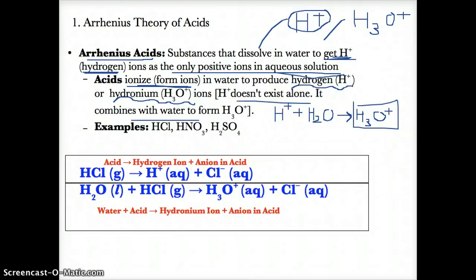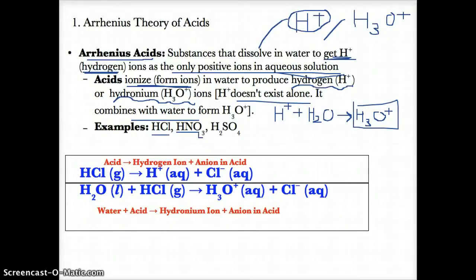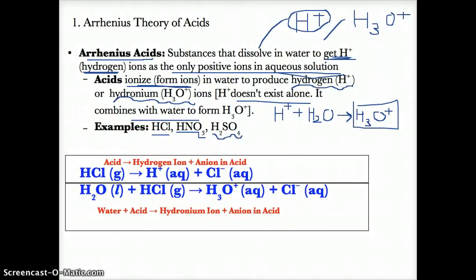Examples of Arrhenius acids — substances that dissolve in water to produce H+ or H3O+ as the only positive ions in aqueous solution — include HCl, which is hydrochloric acid; HNO3, which is nitric acid; and H2SO4, which is sulfuric acid, which you can find on Table K.